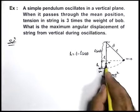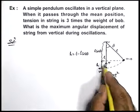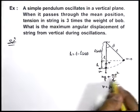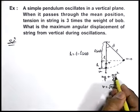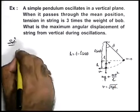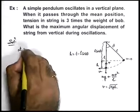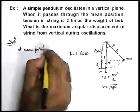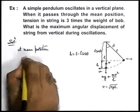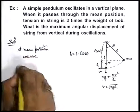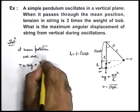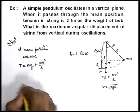And we're given that the tension at the bottom most point is 3 times the weight of bob. So this tension will be equal to gravitational force plus centrifugal force. So we can say, at bottom most position or at mean position of this oscillation, we use tension in string is equal to m-g plus m-v square by l.